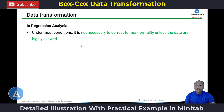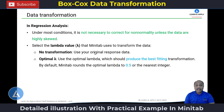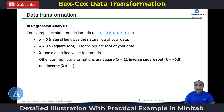In regression analysis, under most conditions it is not necessary to correct non-normality unless the data are highly skewed. When performing the Box-Cox transformation, we can select the lambda value that Minitab uses to transform the data. When doing no transformation, we are using the original response data. When using the optimal lambda value, we are selecting the lambda value which should produce the best-fitting transformation. By default, Minitab rounds the optimal lambda to 0.5 or the nearest integer — for example, Minitab rounds lambda to -1, -0.5, 0, 1, 1.5, 2, in increments of 0.5. When lambda equals 0, we perform the transformation as natural log — we use the natural log of the data. When lambda equals 0.5, we perform the square root function.